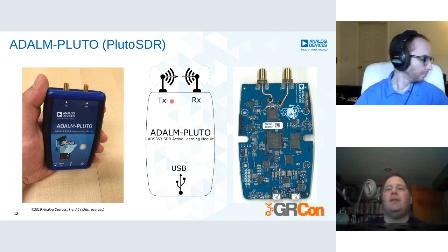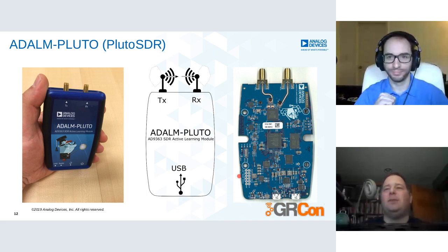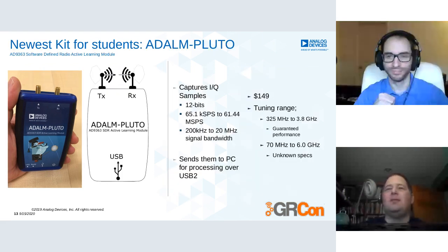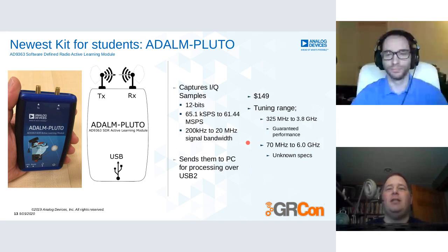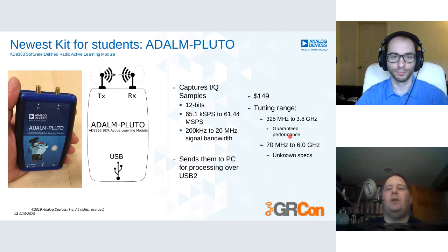From an I/O perspective, we have one transmit path, one receive path, and USB 2. We're a chip company and like to show PCBs — it's relatively straightforward. It captures IQ samples, sends them to the PC for processing. You can do processing on the ARM inside or in the FPGA. There are custom firmware images on the amateur radio side for digital broadcast TV and other things. It's at a $149 price point, with guaranteed performance from 325 MHz to 3.8 GHz.